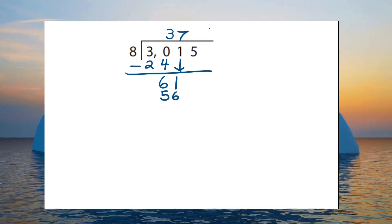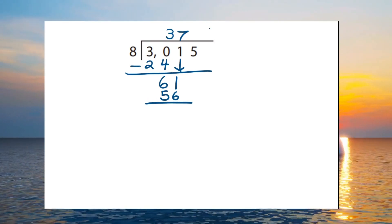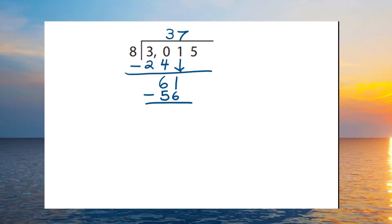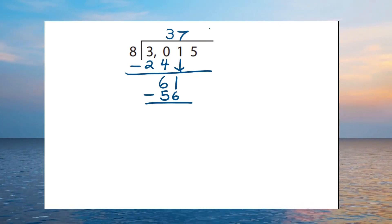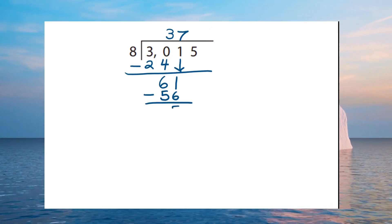For seven times eight is fifty-six. And we can now line the fifty-six below the sixty-one and do our subtraction, leaving us five.